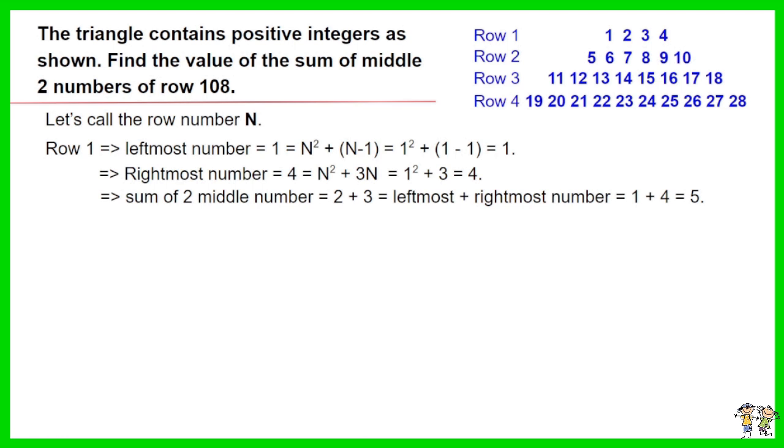The sum of the two middle numbers of row 1 equals 2 plus 3, equals leftmost plus rightmost number, which is 1 plus 4. The result is 5.